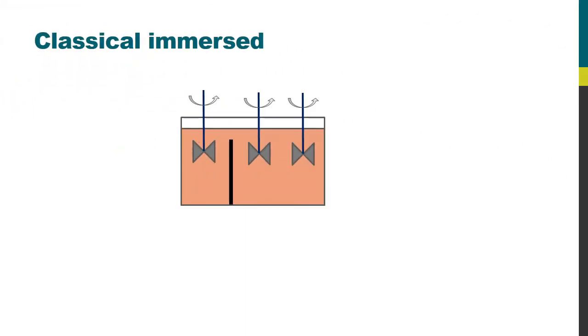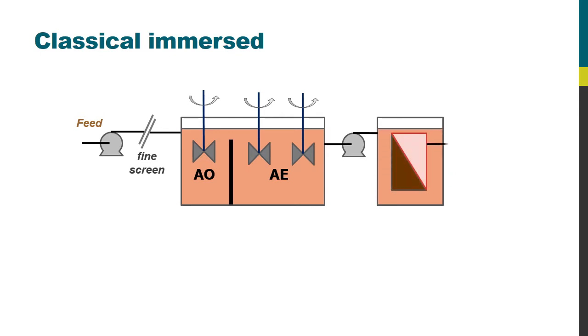So we're back with our immersed MBR, starting with the process tank which has an anoxic and an aerobic zone. The wastewater is fed to the tank via fine screens, normally of one to two millimeter rating, and the sludge from the tank is directed to the membrane tank which is fitted with a membrane from which permeate is extracted.